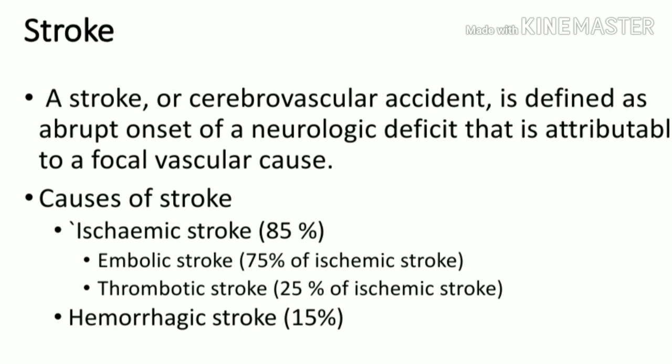Whenever there is a blood supply interruption to the brain, it is called a stroke. There are two major types: ischemic stroke and hemorrhagic stroke. 85% of all strokes are ischemic and 15% are hemorrhagic. Within ischemic stroke, there are two subtypes: embolic stroke, which accounts for 75% of ischemic strokes, and thrombotic stroke.